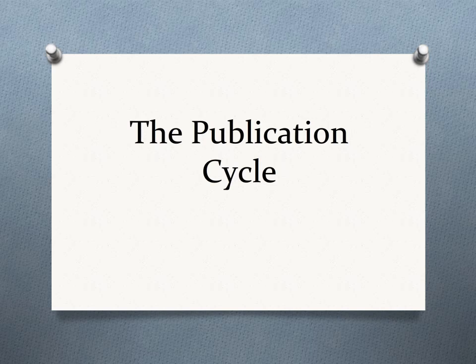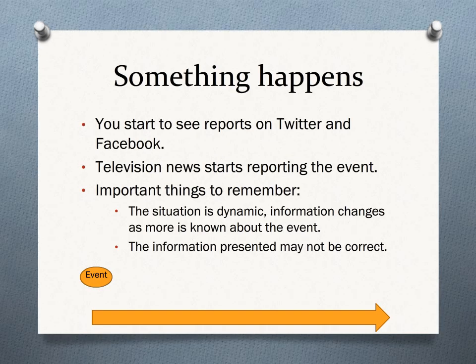The Publication Cycle. The publication cycle starts with an event. Something happens, and you start to see posts about the event on Twitter and Facebook. Depending on the size of the event, you may also start to see reports on television news. At this stage, the information that you find is dynamic and changes frequently. It is important to keep in mind that the information presented may not be accurate.